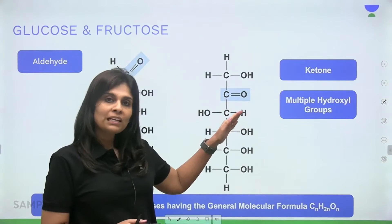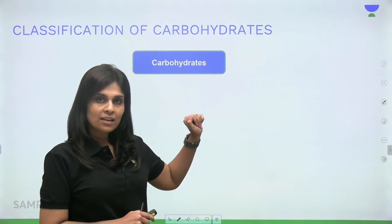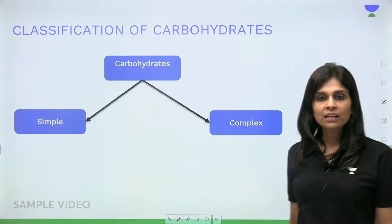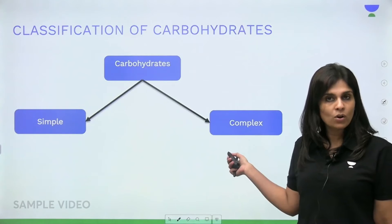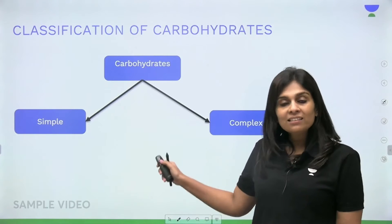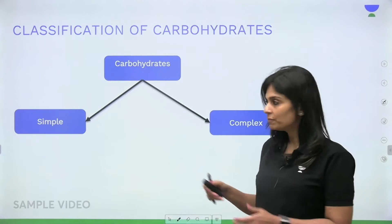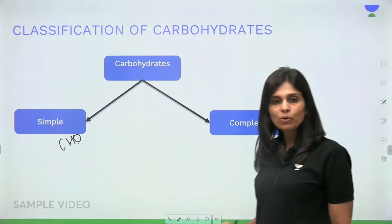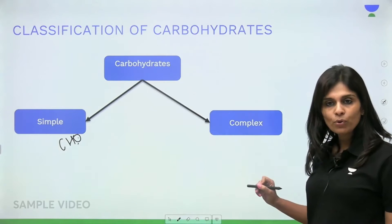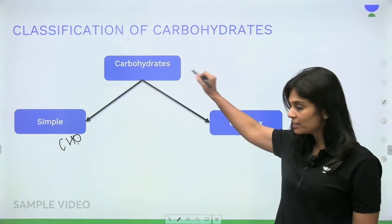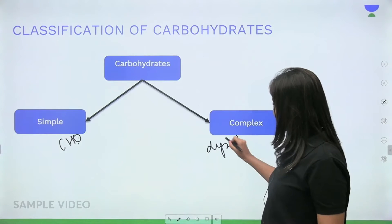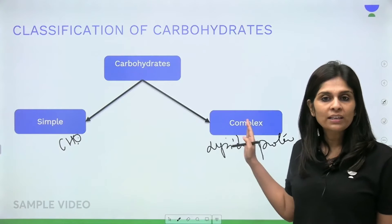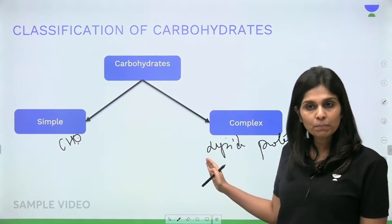Now, how do we classify these carbohydrates? There are two types: simple carbohydrates and complex carbohydrates. Simple carbohydrates have only carbohydrate units in them, whereas complex carbohydrates in addition have either lipids or proteins attached.